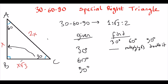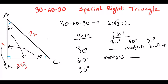If we know across the 60°, to find across the 30°, we divide by √3. So from 30° to 60° we multiply by √3, and the opposite — from 60° to 30° — we divide by √3.